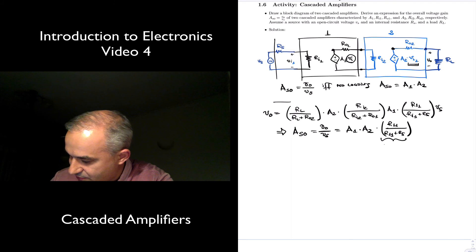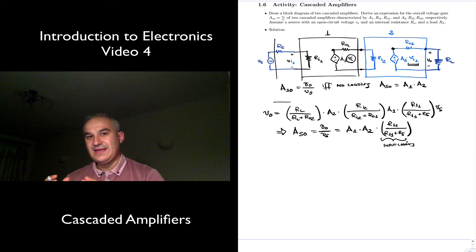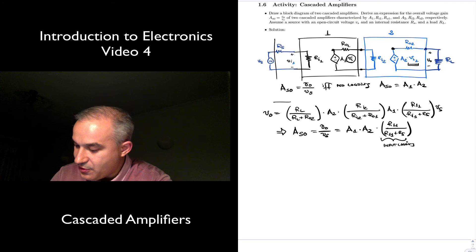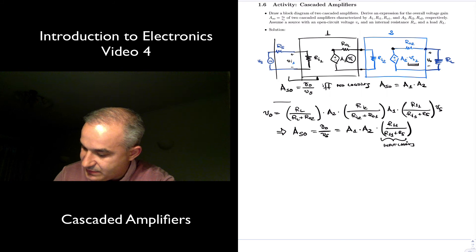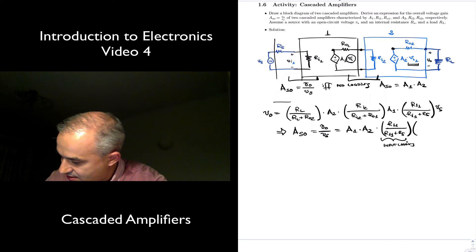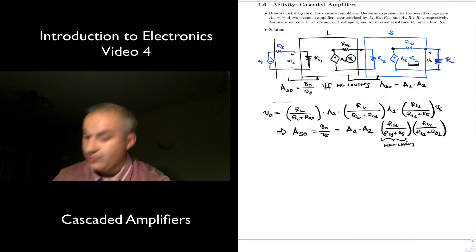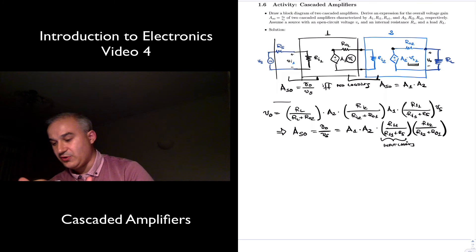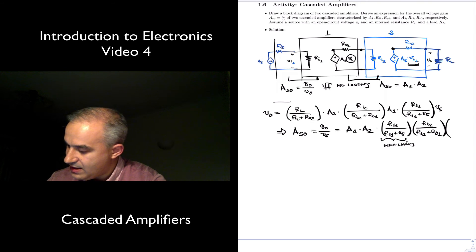But then we have the loading due to the input: Ri1 over Ri1 plus Rs. This is the input loading. Then there is loading due to the interface between those amplifiers, the Ri2 plus Ro1, the relationship between the input impedance of amplifier 2 and the output impedance of amplifier 1. Finally, you have the loading at the output: RL, RL plus Ro2, so output loading.